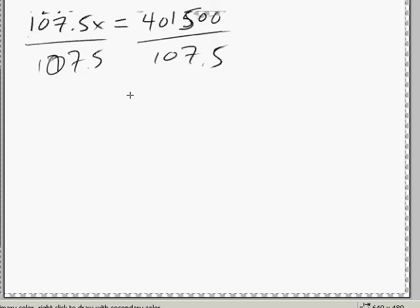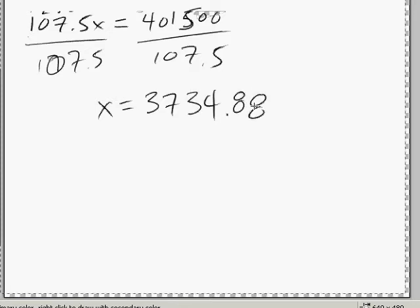401,500 divided by 107.5 equals x equals 3,734.88. That doesn't look right.